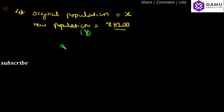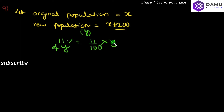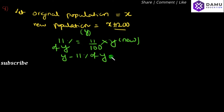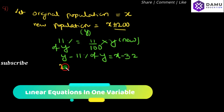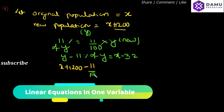Then this new population decreased by 11 percent. That is 11 by 100 of Y, where Y is the new population. So Y minus 11 percent of Y will equal what the town now has, which is 32 less people than before adding 1200 — that is, the original population. So: X plus 1200 minus (11/100 × Y) equals X minus 32.